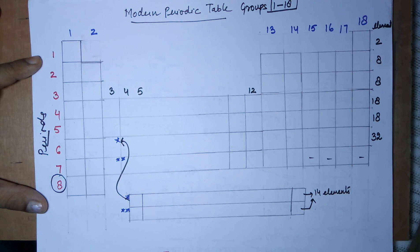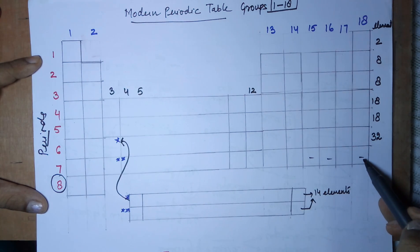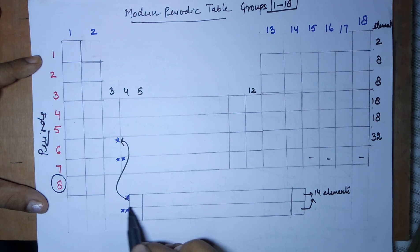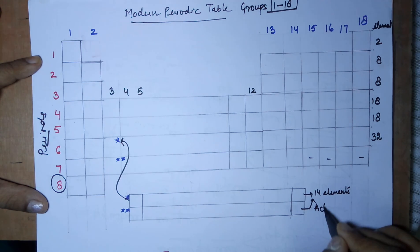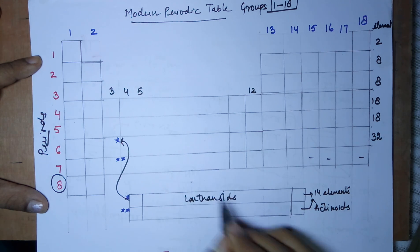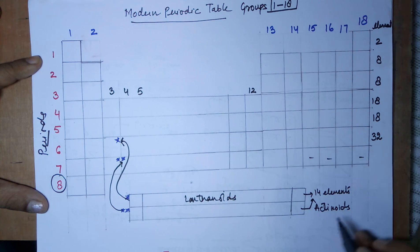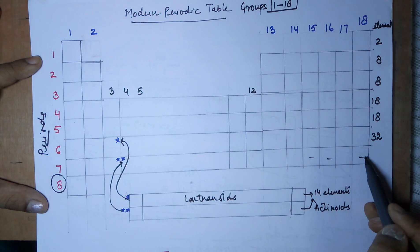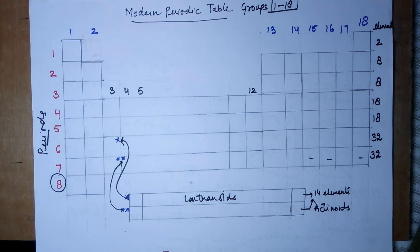Moving to the seventh period — in some older books you would find dashes showing undiscovered elements, but today all elements of the seventh period are discovered, so we no longer call it incomplete. This period also has elements from group 1 to 18, that is 18 elements, plus a double star referring to the lower row — the actinoids — which is again 14 elements, making 32 total.